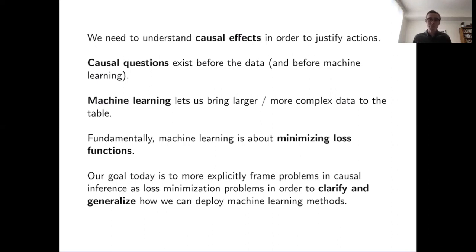But if you talk to engineers, they might tell you this is actually a fairly narrow view of what machine learning is. There's a huge number of tasks that fit under the general umbrella of machine learning, and the prediction task is a very high-impact area but still a pretty small slice of the pie. If you wanted to attempt a general definition of machine learning, some ingredients you'd certainly need are: a task — something you're trying to do; a loss function — something that rewards or punishes you for performing the task well or poorly; and data you can use to learn an algorithm that performs the task well according to the loss function.